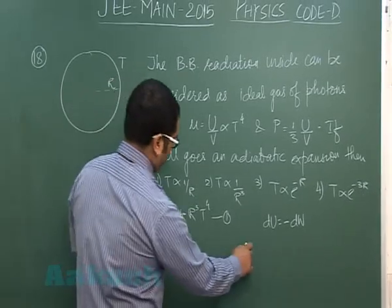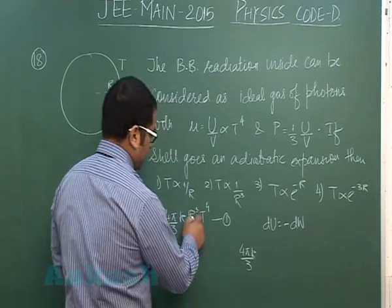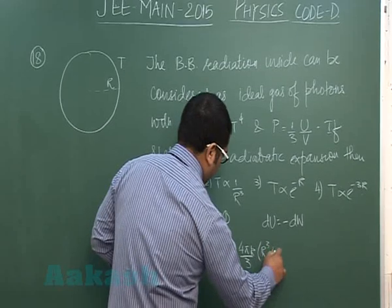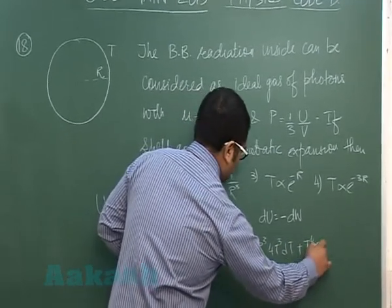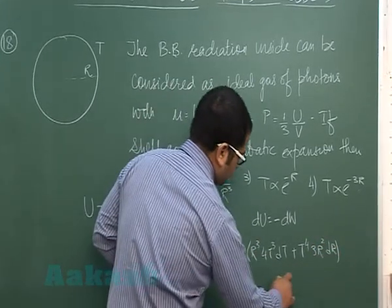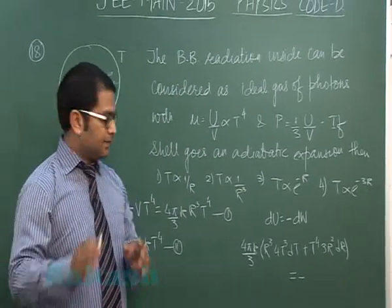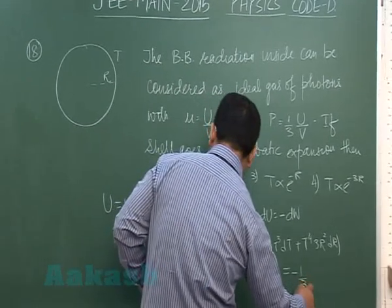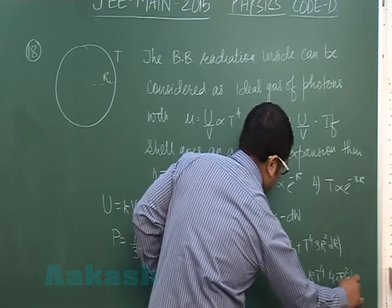The change in internal energy DU can be found from here: 4πK/3 is constant, and R cubed T to the 4 gives us R cubed times 4T cubed DT plus T to the 4 times 3R square DR equals minus DW. DW is the elementary work done, so that's P DV, and P is 1/3 K T raised to the power 4, DV is 4π R square DR.